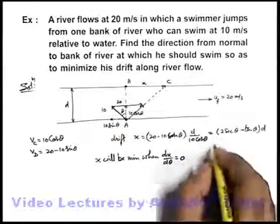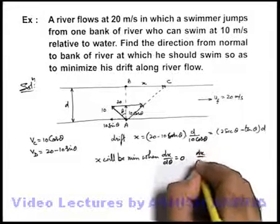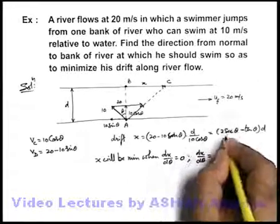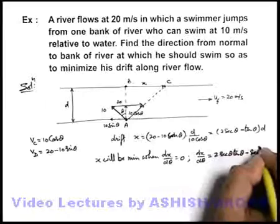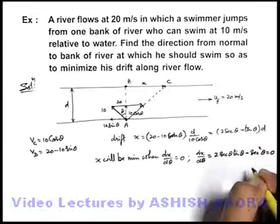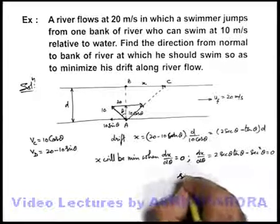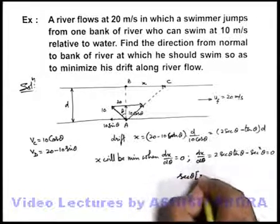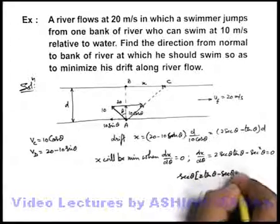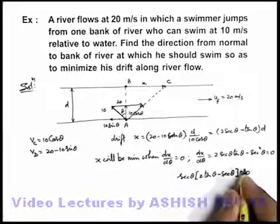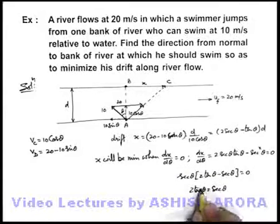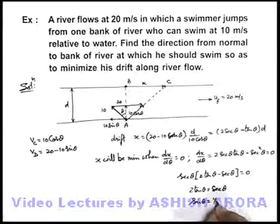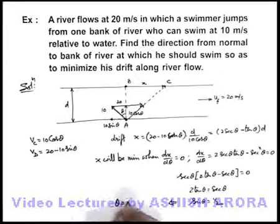Differentiating the expression, dx/dθ = 2 sec θ tan θ − sec² θ = 0. Taking sec θ as common, we get 2 tan θ − sec θ = 0. Since sec θ can never be zero, that means 2 tan θ = sec θ. Writing sin/cos and 1/cos, this gives sin θ = 1/2, which implies theta equals 30 degrees.